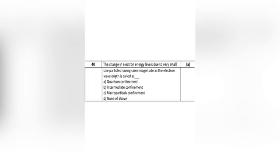Question 16: The changing electron energy level due to very small size particles having the same magnitude as the electron wavelength is called — Option A: quantum confinement. Option B: intermediate confinement. Option C: macroparticles confinement. Option D: none of the above. The correct answer is Option A: quantum confinement.